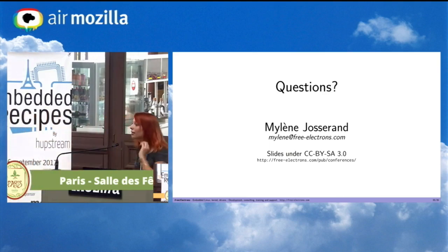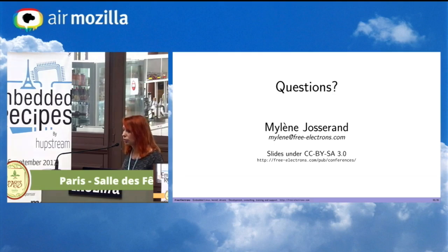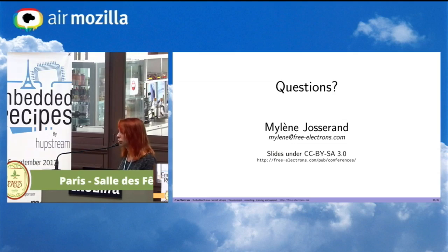Question: About the support level — you said there was development, stable, and community. What does it mean to be at the community support level? Answer: The community support level means that sometimes you will have some bug fixes integrated in these releases, but you won't have security patches like you do with stable. You will have some kind of patches.